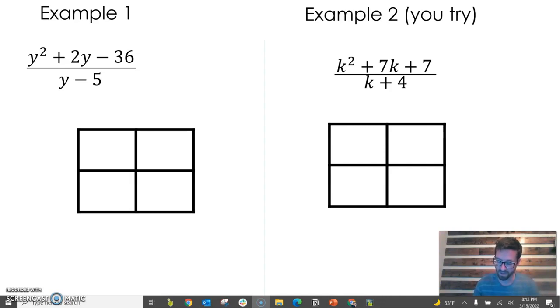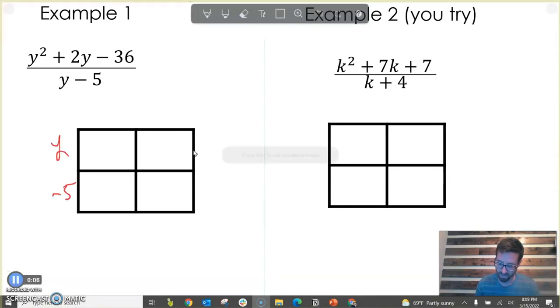So what I'm going to do is I'm going to put my divisor out here on the side. If I'm dividing by y minus 5, I'm going to place y minus 5 there on the side. And then I'm going to place my dividend inside here with the quadratic term taking the place of this top left box.